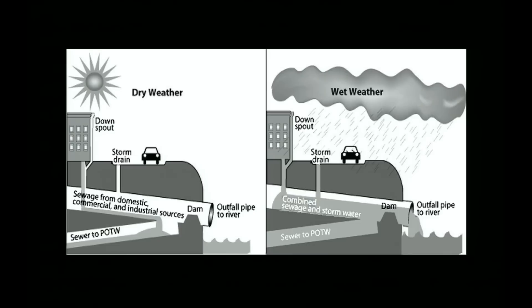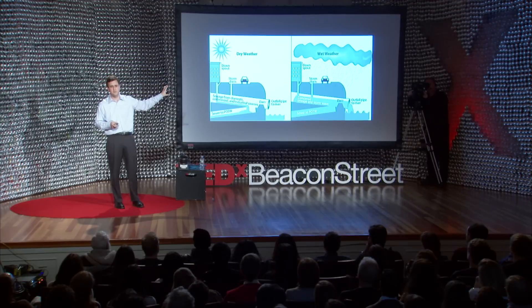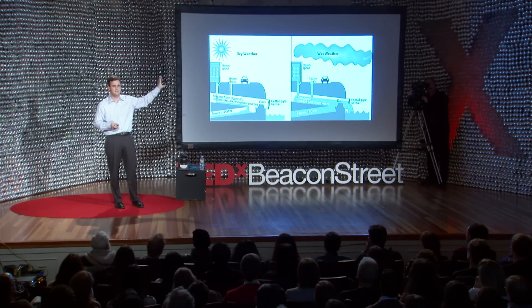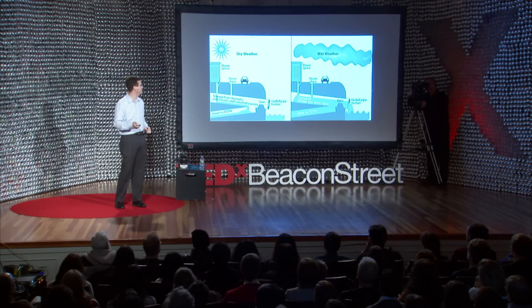I wanted to give you one graphic that basically shows you what this really looks like. During dry weather, a combined sewer functions quite well — it takes the storm sewer, the sewage from homes and industry, and takes it off to the wastewater treatment plant. Everything is going just fine. The problem is, in these 772 cities, when it rains, that rainwater enters into the same sewer, and the capacity of the wastewater treatment plant and of the sewer is inadequate to address these flows. So the combined flows discharge directly into the river.